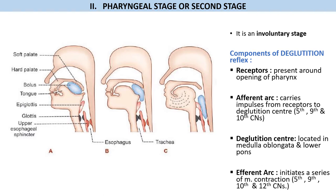The second stage of deglutition is the pharyngeal stage. This is an involuntary stage — you cannot intentionally control the activities occurring in this stage. The pharyngeal stage is caused by a swallowing reflex. The pharyngeal stage consists of a swallowing reflex, and like any other reflex, it has specific components.